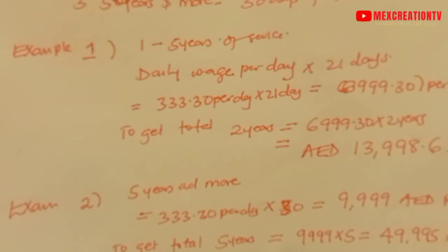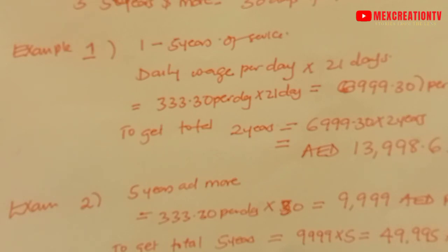For five years total, you take 9,999 dirhams and multiply by five years. So 9,999 times 5 equals 49,995 dirhams. That means when this person resigns or completes the contract after five years, they are going to be earning 49,995 dirhams as their gratuity.